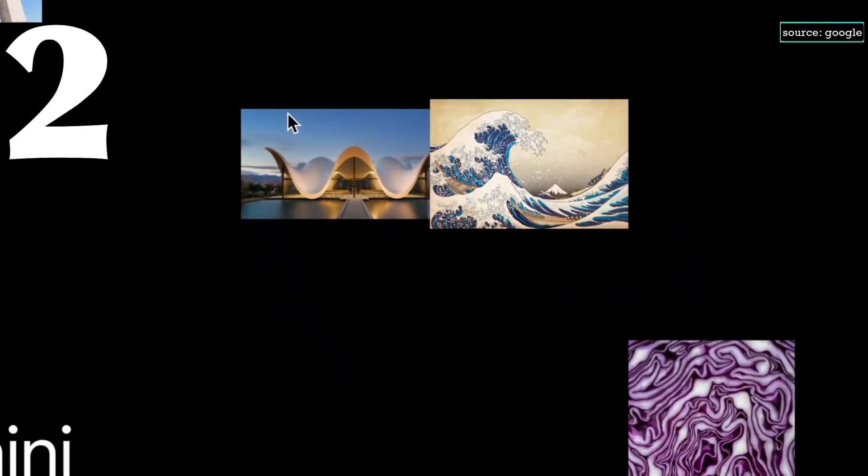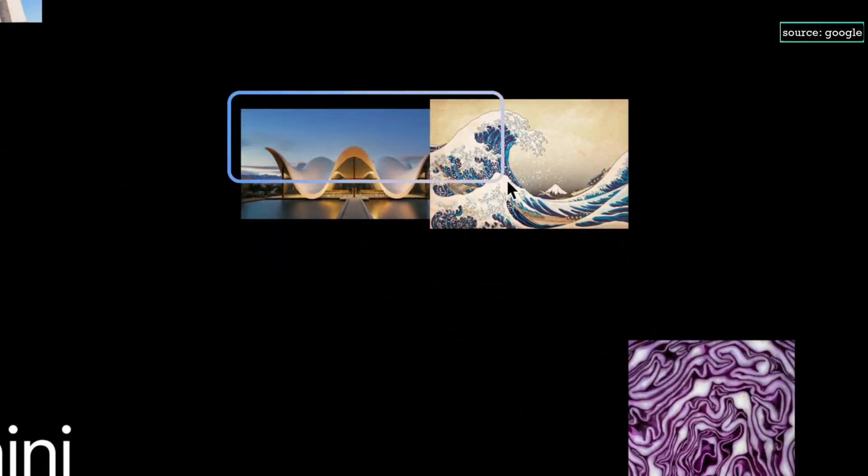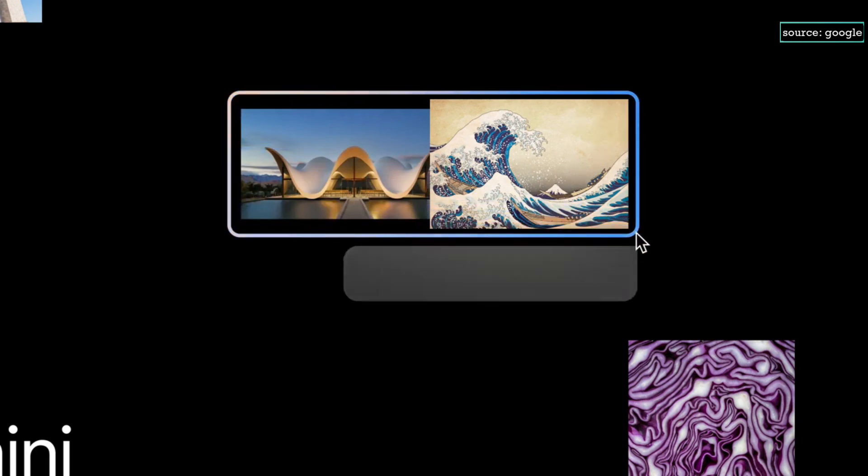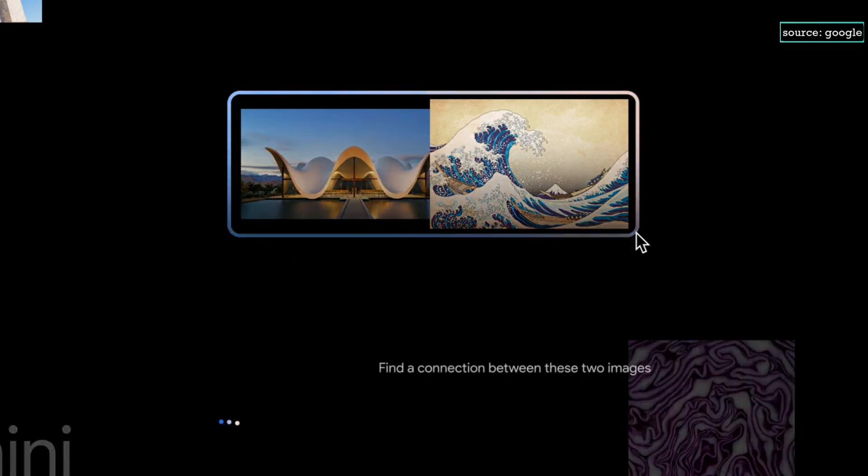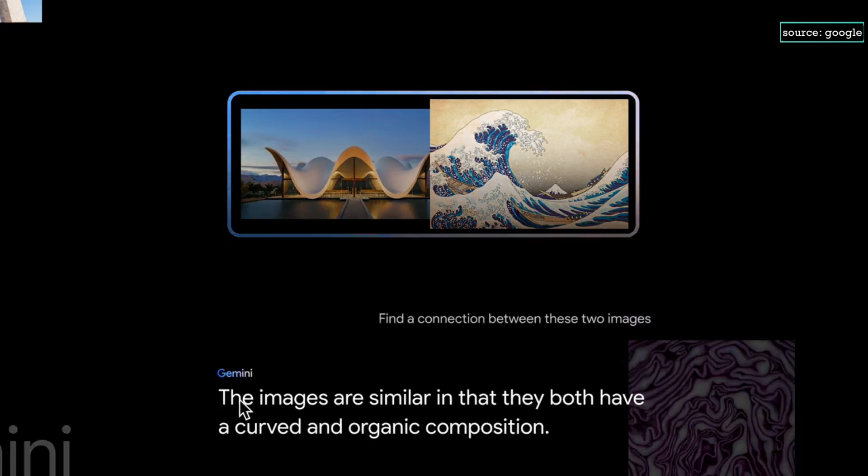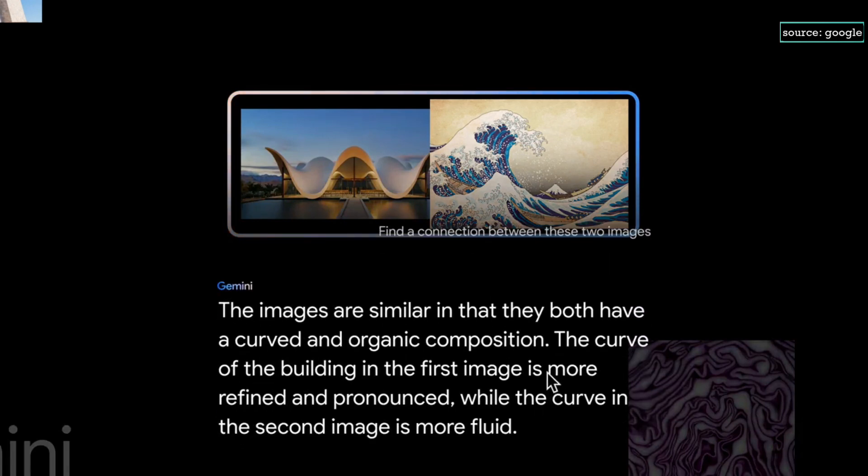Let's see if our multimodal model Gemini can find the similarities between images. We'll start with these two, the Bosch's Chapel and this print by Hokusai. And I'll prompt Gemini, find a connection between these two images. Let's see what Gemini says. A curved and organic composition, the building is more refined, and the second image is more fluid. Yeah, that worked!